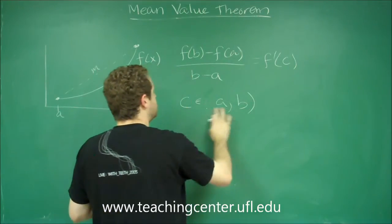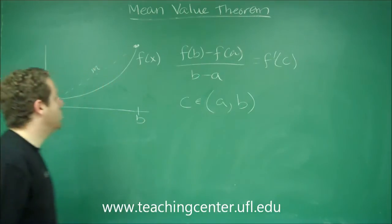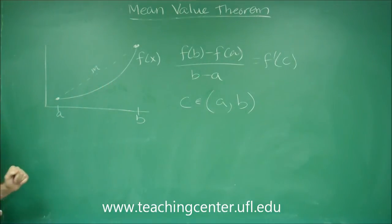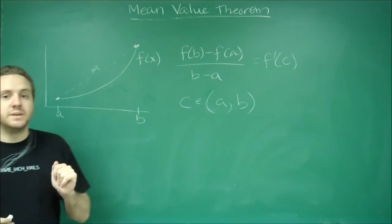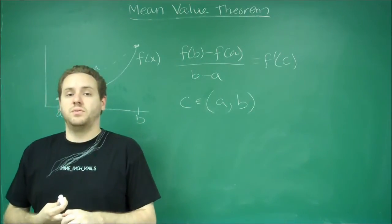Sorry, there should be parentheses. Somewhere in between a and b, the derivative of your function should be equal to the slope between the endpoints. And that's really all there is to the Mean Value Theorem.